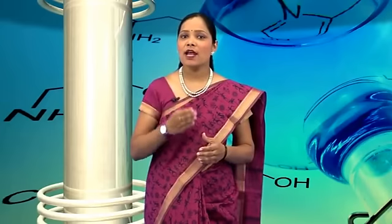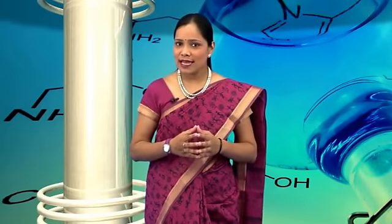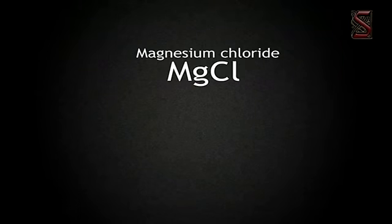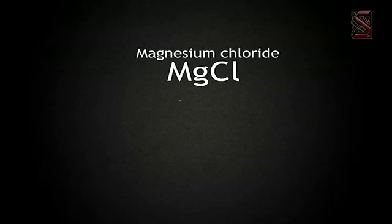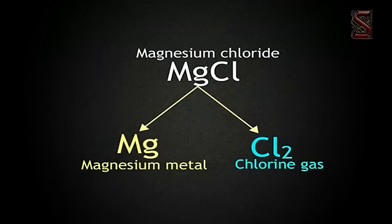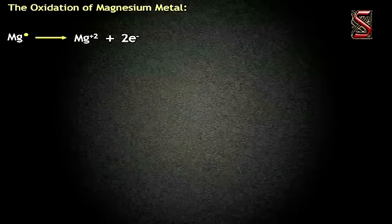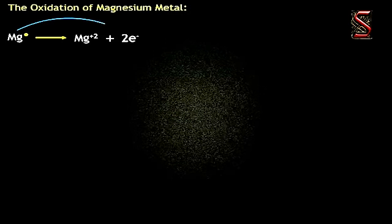Let us now take one example of an ionic bond — the formation of magnesium chloride. We will use Lewis electron dot symbols to describe the ionic bonding observed in magnesium chloride. The formation of magnesium chloride can be thought of as resulting from a reaction involving magnesium metal (Mg) and chlorine gas (Cl₂). The oxidation of magnesium metal: a magnesium atom loses its two outer shell electrons to become a magnesium ion (Mg²⁺, a cation). The magnesium metal is said to be oxidized.